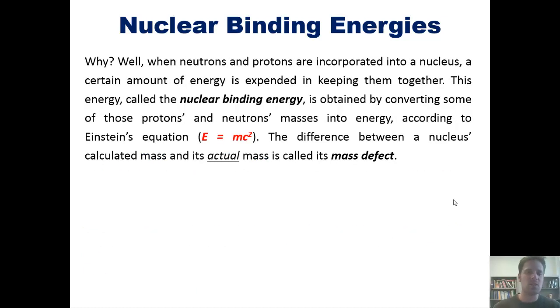Well, when neutrons and protons are incorporated into a nucleus, a certain amount of energy is expended to keep them together. This energy, called the nuclear binding energy, is obtained by converting some of those protons' and neutrons' masses into energy, according to Einstein's equation E = mc². The difference between the nucleus' calculated mass and its actual mass is called its mass defect.